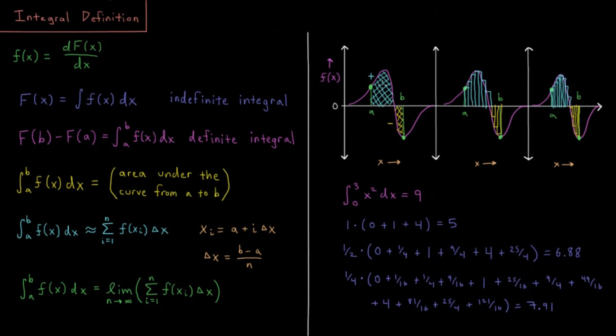So this area is also what you would call signed. So it's building up positively on this side when the function is positive and it's negative when the function is over here. So this is adding to the value of the integral and this side is subtracting from the value of the integral.